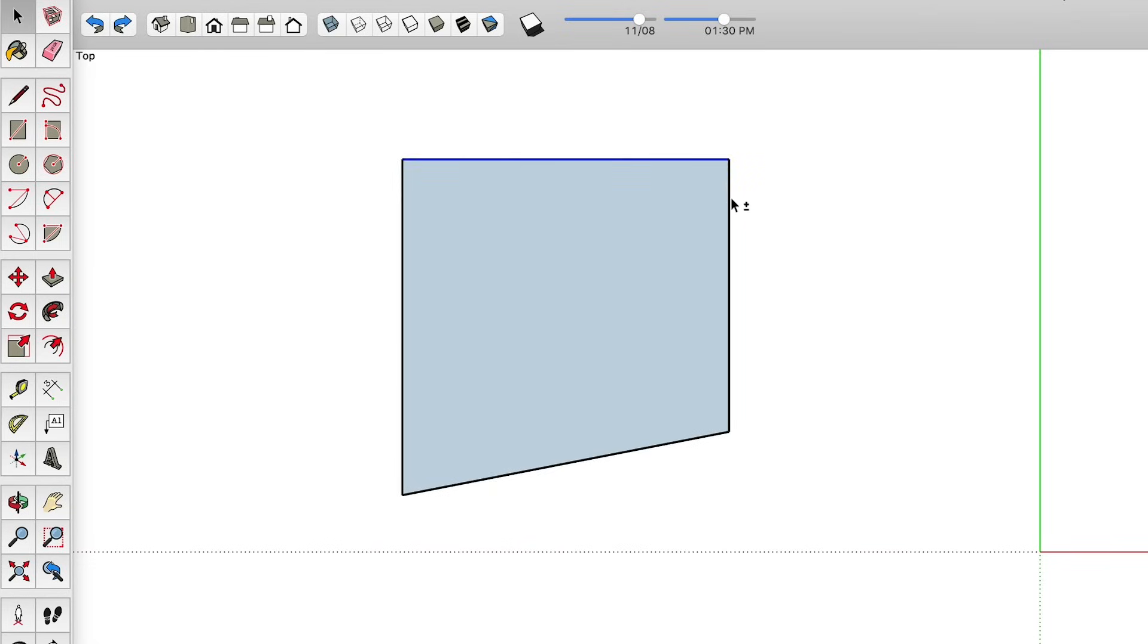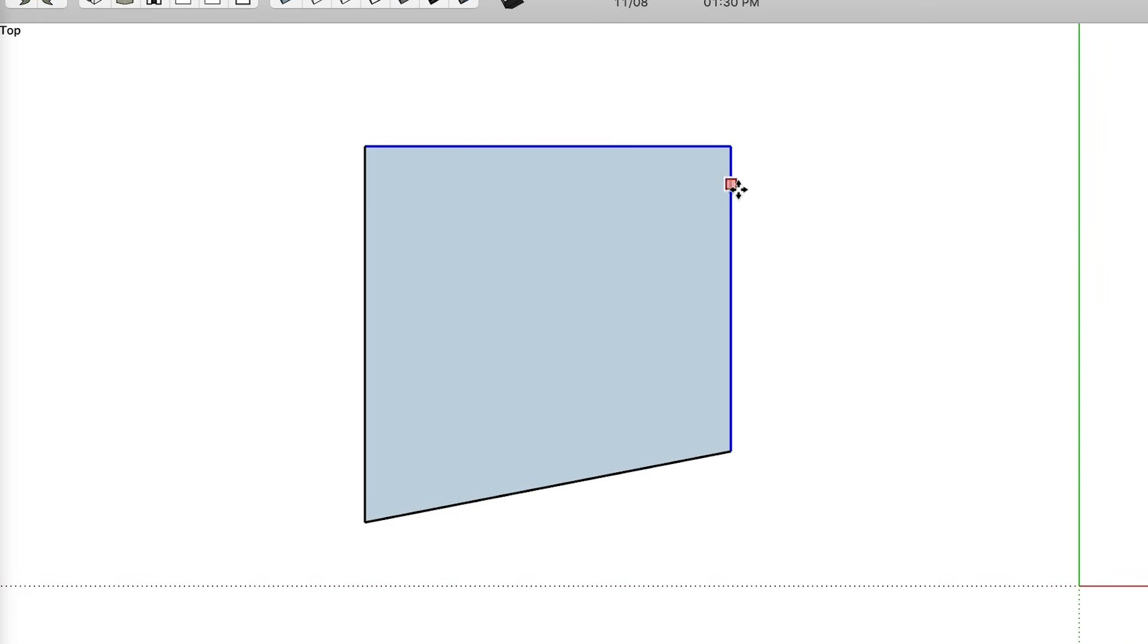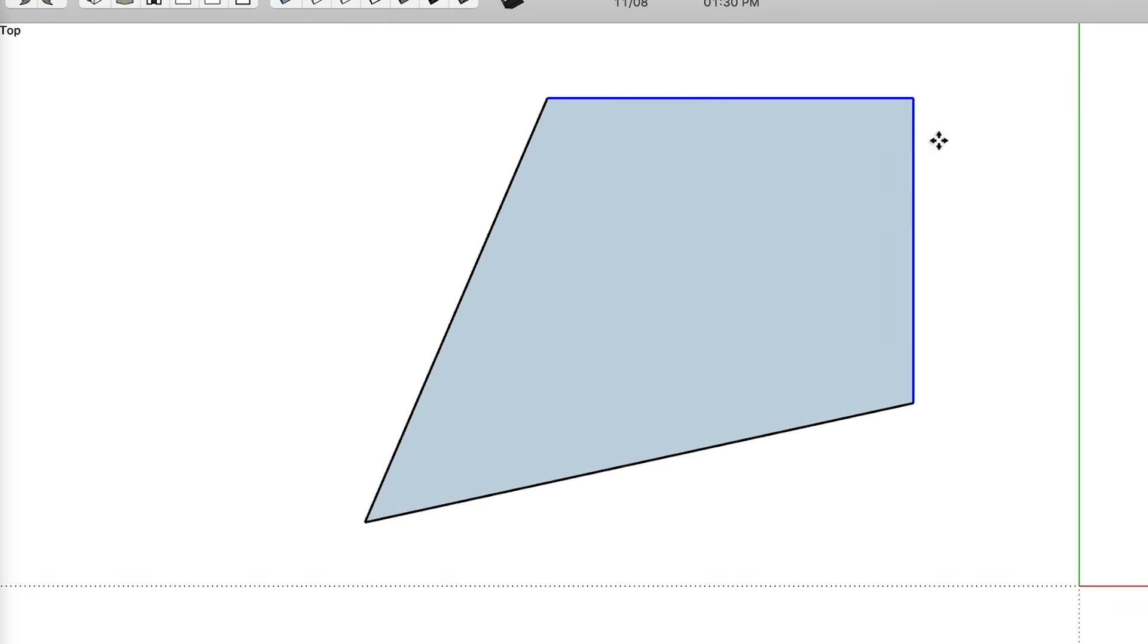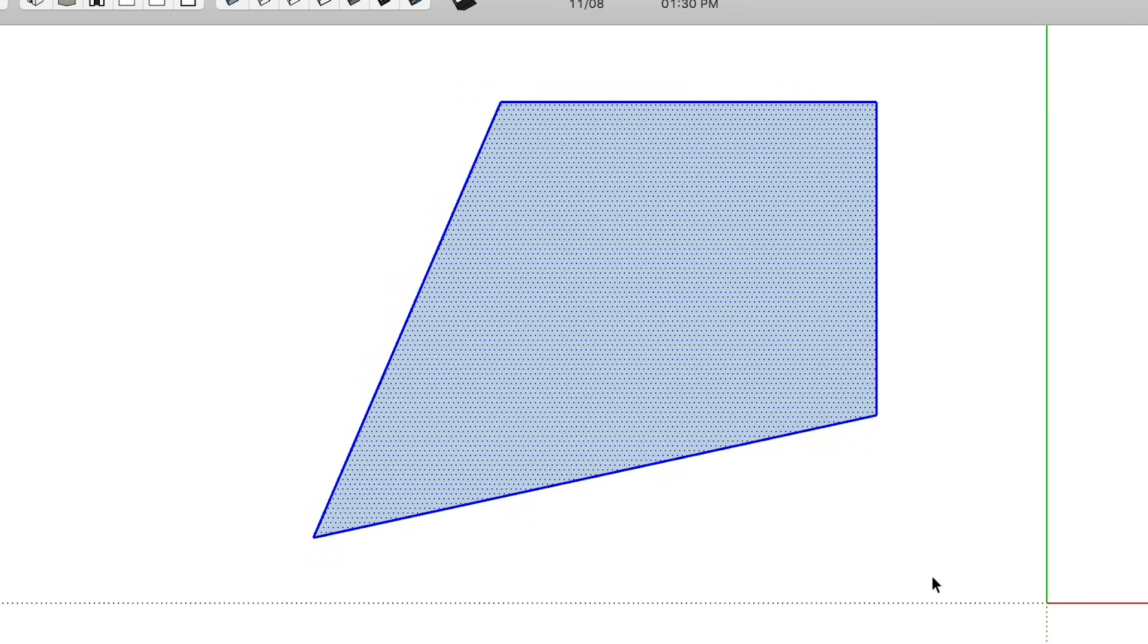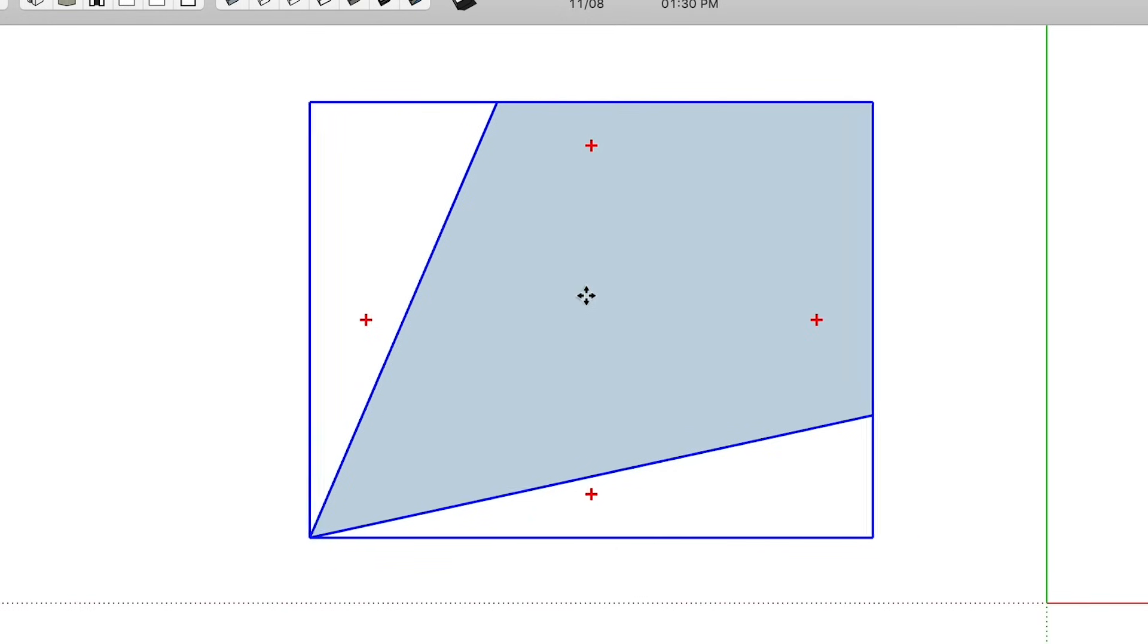Of course, you can move multiple edges and faces together at the same time. You just need to pre-select them with the select tool. And then the same rules apply with the move tool for editing the position of the selected geometry. And if you want to move a whole object, you can either pre-select all the geometry before using the move tool. Or if you've made it into a group, then you can just use the move tool to move the whole group together. Again, practice these things in a simple 2D drawing first until they become second nature.